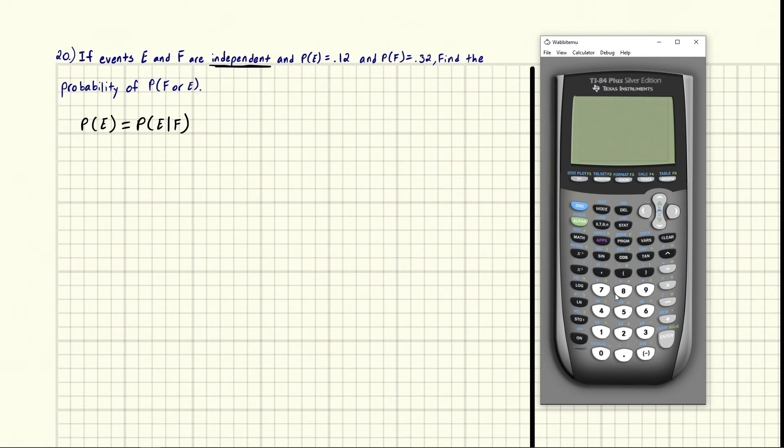The same thing can be said for the event F. The probability of F is not changed if E happens first. It doesn't matter which one happens before because they are independent. So that's our first really big piece of information.